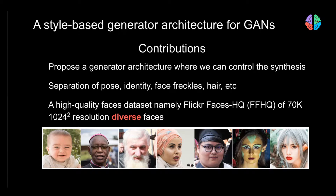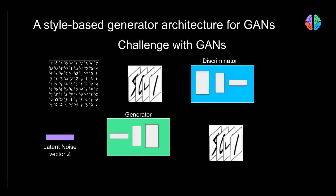On top of this architecture, they also introduce a dataset called Flickr Faces HQ, which is 70,000 high-resolution images of very high quality and diversity in terms of pose, background, and face color. Before we look at StyleGAN, let's understand the shortcomings of standard GANs.